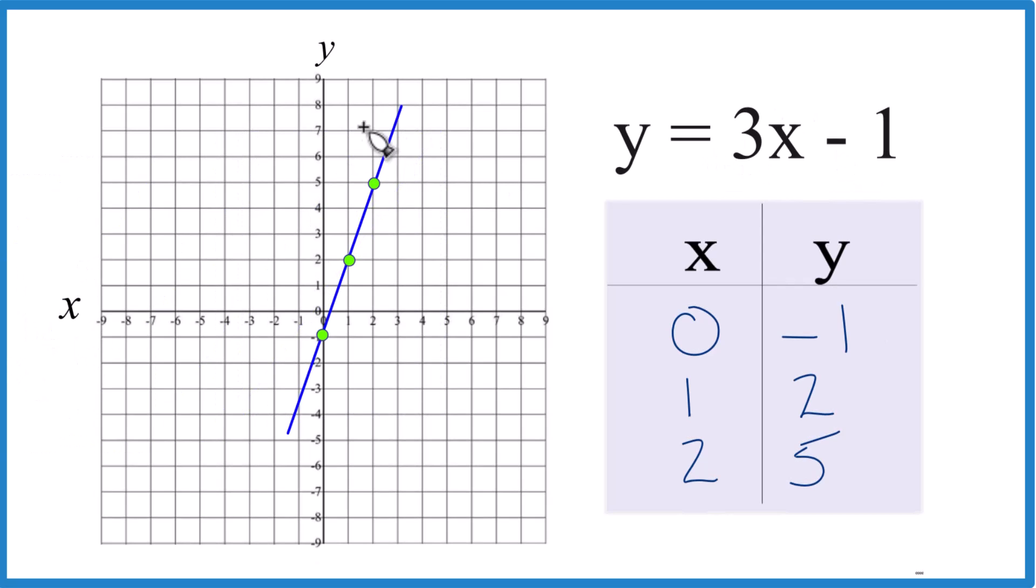Let's put a line through that. Then we can put arrows, that'll show that it goes to infinity, and we're done. That's the graph for y equals 3x minus 1.